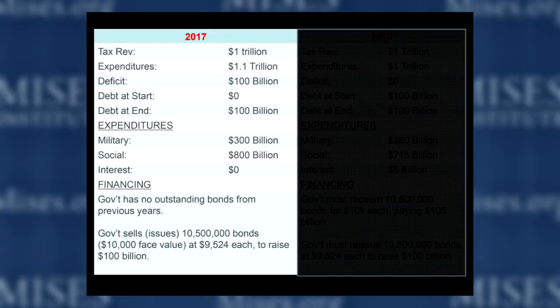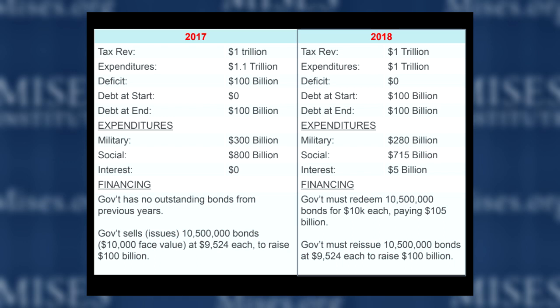Now looking at the next year: tax revenues are again one trillion dollars. This time expenditures are only one trillion, so they ran a balanced budget. That's why the deficit for 2018 is zero. The debt at the start of the year is one hundred billion — that's the debt at the end of 2017. The debt at the end of 2018 is also one hundred billion, because they ran a balanced budget. If you run a zero deficit, the debt doesn't go down — it just stays the same.